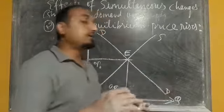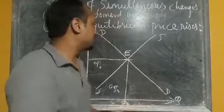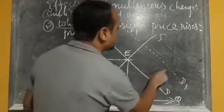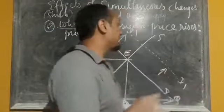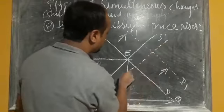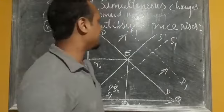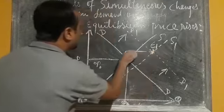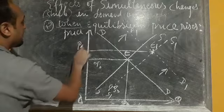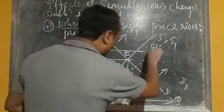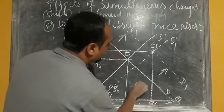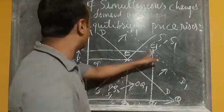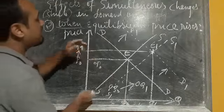If demand is changing by a greater amount than the change in supply — suppose demand shifts by a greater proportion to D1D1, while supply is only changing by a smaller proportion to S1S1 — then the new demand and supply curves intersect at a new equilibrium point E1. At E1, price rises from P0 to P1 and quantity also increases from OQ0 to OQ1.